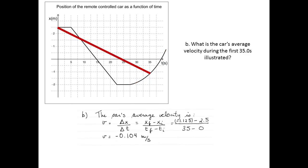Compare this to the time between 5 and 22.5 seconds when the slope was constant, which means the velocity was constant. Next, we find the car's average velocity during the first 35 seconds. Average velocity is defined as displacement over time: final position minus initial position over final time minus initial time. The final position is minus 1.125 meters, the initial position is 2.5 meters, the final time is 35 seconds, and the initial time is 0. The average velocity is minus 0.104 meters per second.